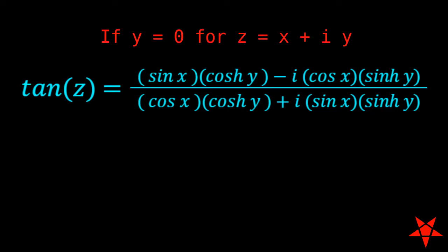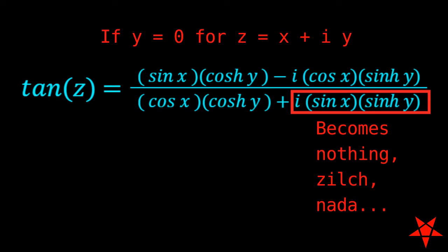Now when the imaginary component of z is zero, the first term in the denominator is equal to cosine of x and the second imaginary term in the denominator is equal to zero.